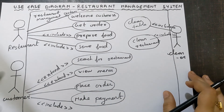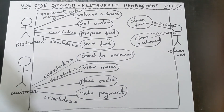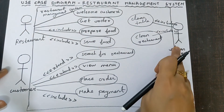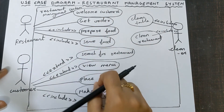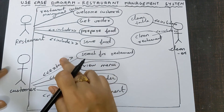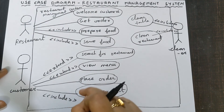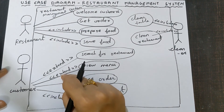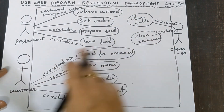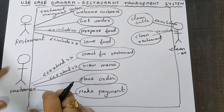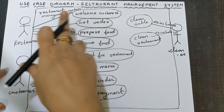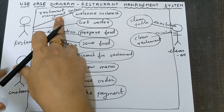These are the steps to draw the use case diagram. Step one: draw the actors. Step two: for each actor, write the use cases and join using a connector line. Step three: mention the stereotypes — include means mandatory, extend means optional. Step four: draw the system boundary, a big box with actors outside and the rest inside, and give it a name related to the diagram, such as restaurant management system.